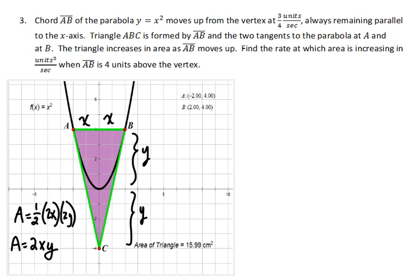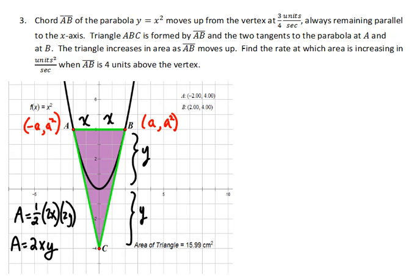Now let's just give some coordinates of point B. We'll call it (a, b) where b is going to be a². Then the coordinates of point A would be (-a, a²), and this is where we begin.